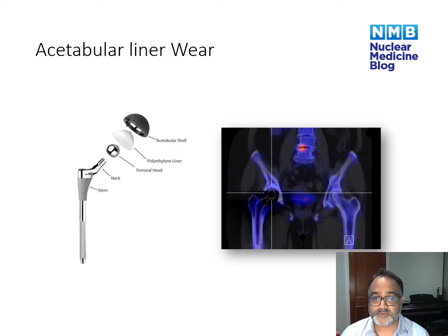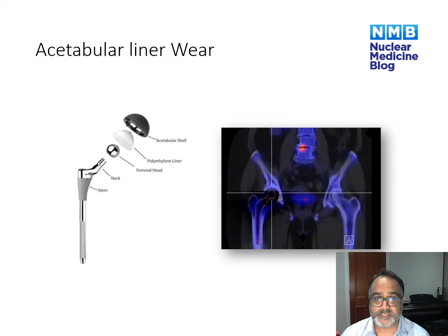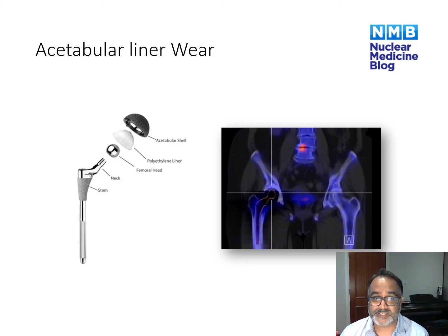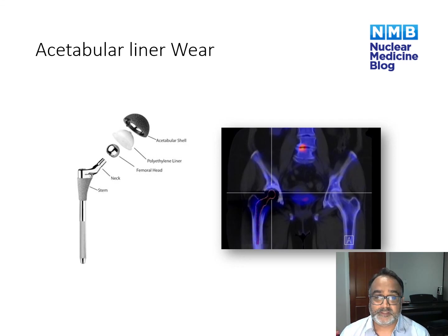Another finding to pick up is acetabular liner wear. This is not something seen on the SPECT but on the CT component. Most hip replacements have a polyethylene liner between the acetabulum and the femoral head. Over time, this plastic liner can wear out and you will notice the femoral head sitting asymmetrically within the acetabulum. This should be commented on as the liner will need to be replaced.